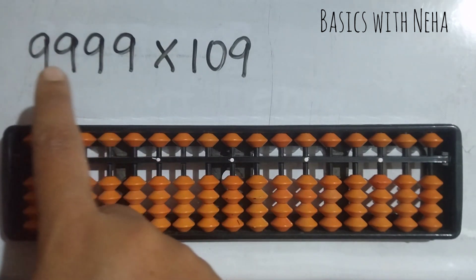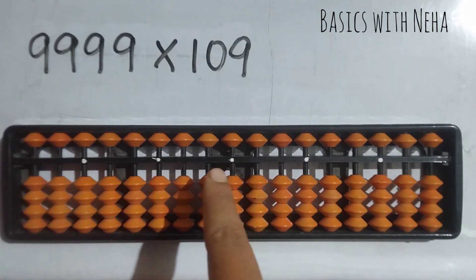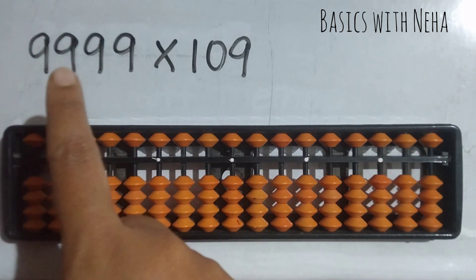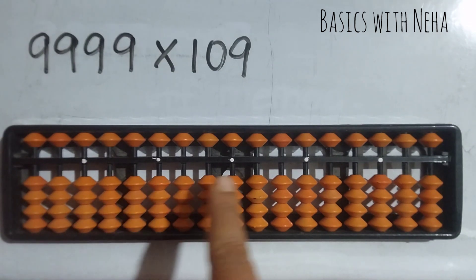9999 into 109. The number of digits will tell you how many rods you have to consider. So there are a total of seven numbers, four, five, six, seven numbers, so take the seventh rod from the house pointer.